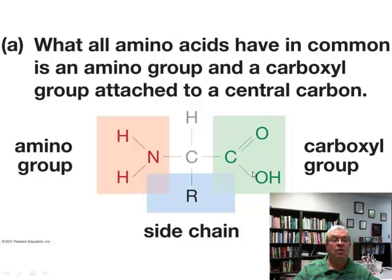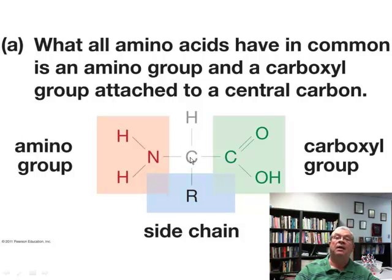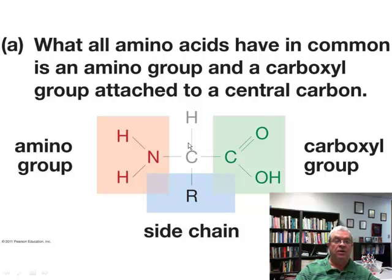What do all amino acids have in common? They have these nine atoms in common. This is a central carbon atom. How many bonds does each carbon atom have? It's supposed to have four — and this one does: one, two, three, four.